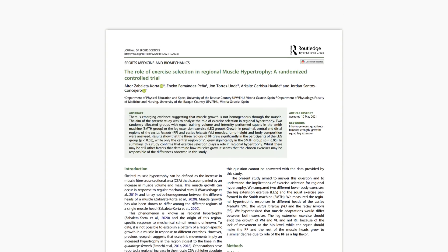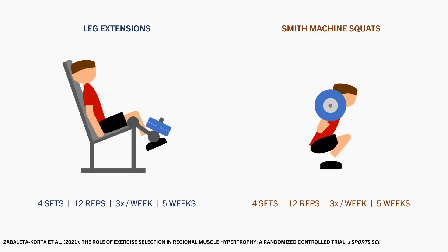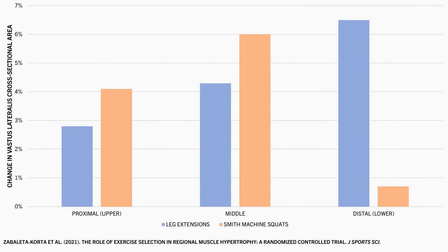For example, one study explored the effects of quad training with different exercises on regional muscle hypertrophy. Trainees performed four sets of 12 reps to failure with either leg extensions or smith machine squats three times per week for five weeks. While both exercises were effective at promoting overall quad growth, regional hypertrophy was different between groups. Smith machine squats resulted in greater growth of the upper quad region, while leg extensions resulted in superior growth of the lower quad region. This gives us reason to believe that exercises with different strength curves may bias different regions of a muscle.